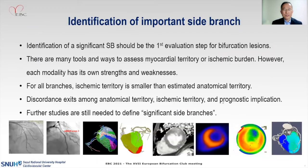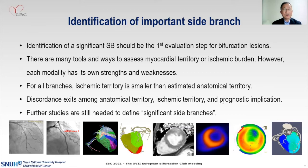In summary, identification of a significant side branch should be the first evaluation step for bifurcation lesions. We have many tools to assess myocardial territory or ischemic burden. However, each modality still has its own strengths and weaknesses. For all branches, we know that ischemic territory is smaller than estimated myocardial territory. Furthermore, discordance exists among anatomic territory, ischemic territory, and prognostic implications. Therefore, my conclusion is that we definitely need further studies to define significant side branches. Thank you very much for your kind attention.